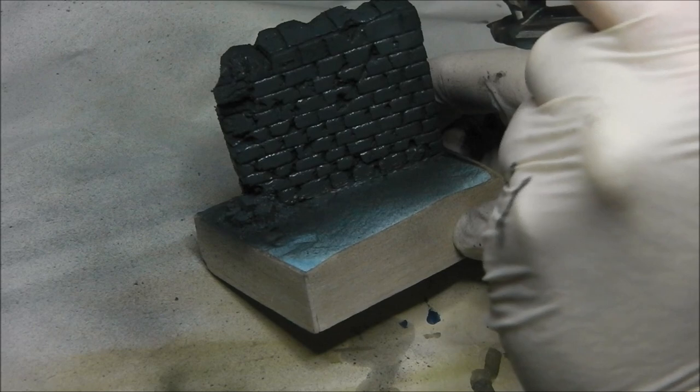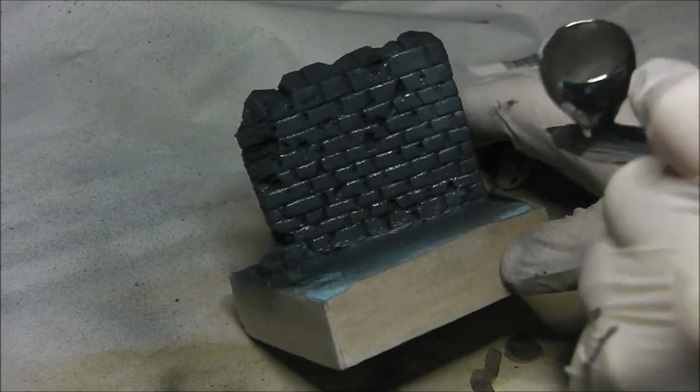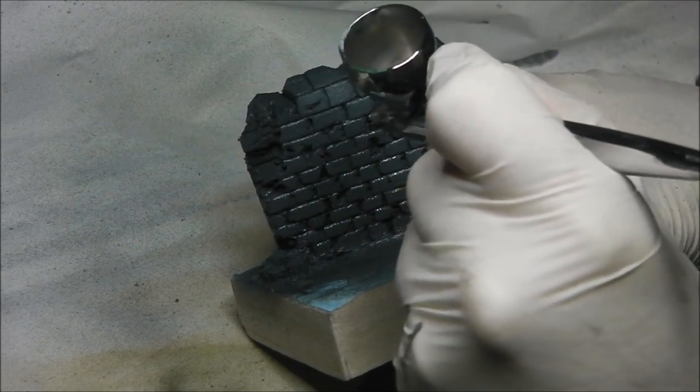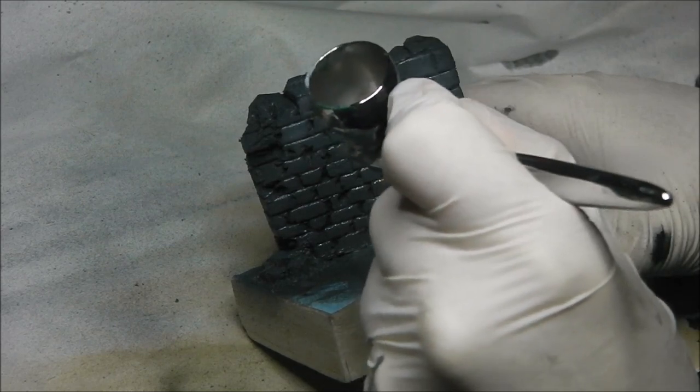Now I'm coming in with light grey, and again I'm picking out certain sections of brick. I'm not trying to pick out individual bricks, but more so a column or a section of five or six bricks, and just giving it a general light coat of the light grey, again from Vallejo.